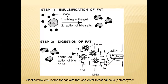Coming to emulsification — the fat material or fat food is very big in size, but lipase enzymes are very small. If the fat is not broken down into pieces, the lipase enzymes cannot properly digest the fat. So emulsification comes to rescue this problem. In the small intestine, bile salts act on the fat material and break it into small pieces.